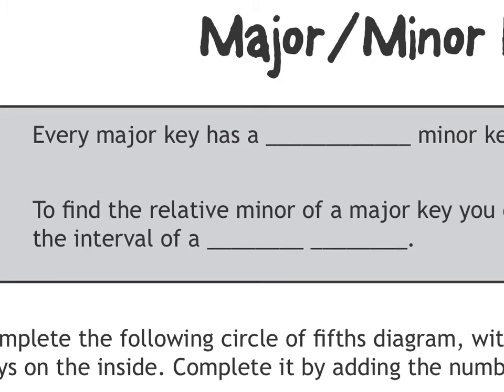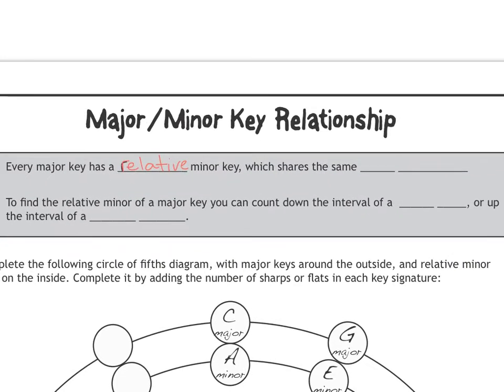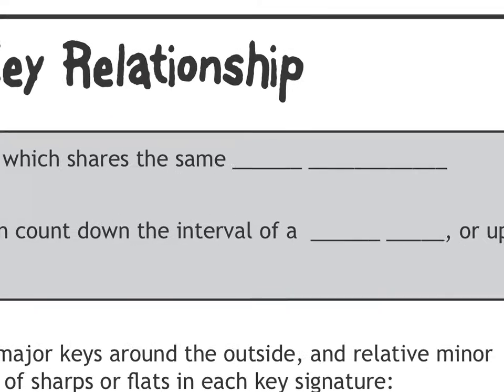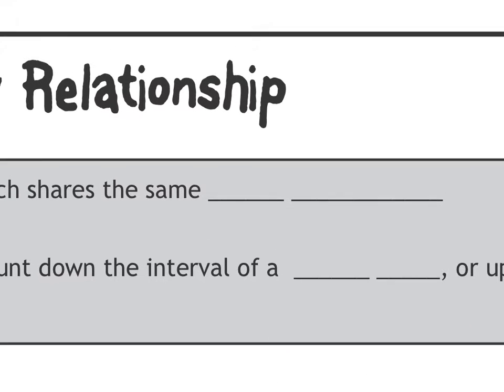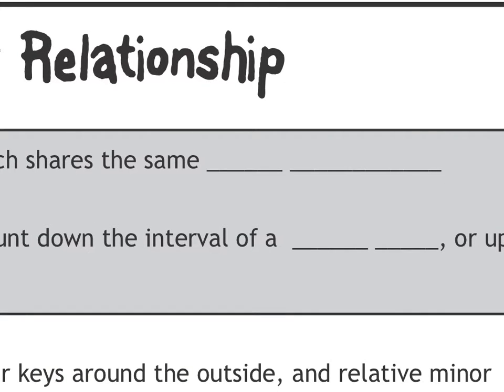Every major key has a relative minor key, which shares the same what? They have the exact same key signature. They use the exact same key signature, they share the exact same sequence of notes, they just have a different starting note. That's it, they start at a different point in that sequence.